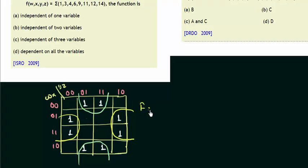Thus the function f is, let's see, for this one, this group, the y is changing and z is 1, so z. And x is 0 and w is changing, so x complement.